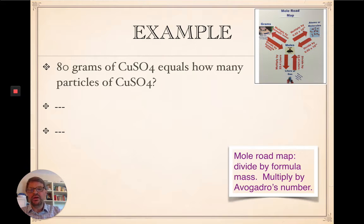Let's try a few more. 80 grams of copper sulfate. How many particles? I don't see molecules here because it's an ionic compound. And technically, we call it a formula unit. So, this is a two-step problem. We're starting in grams and we're ending in atoms or molecules, particles. So, first step, grams to moles divided by formula mass.